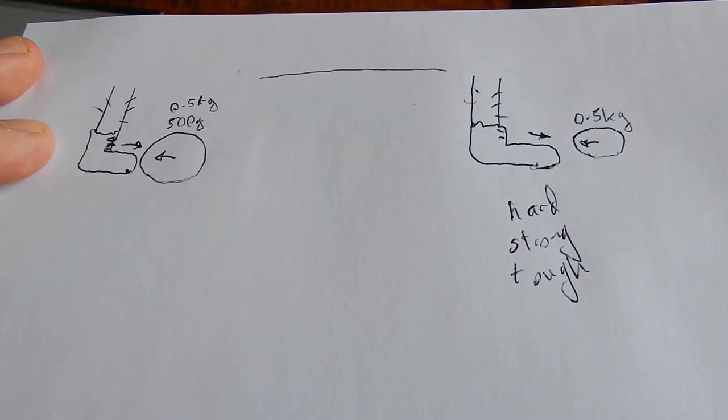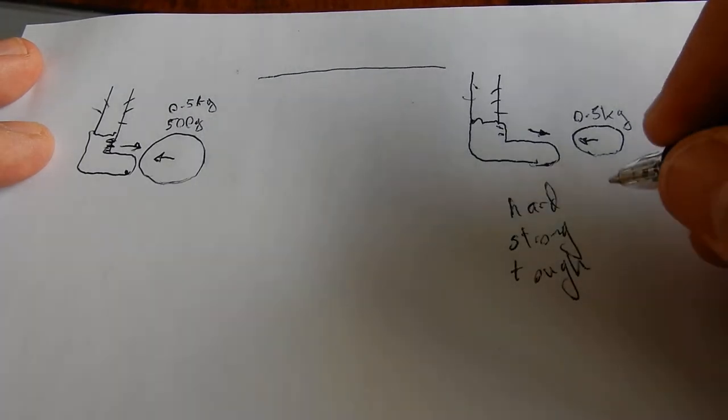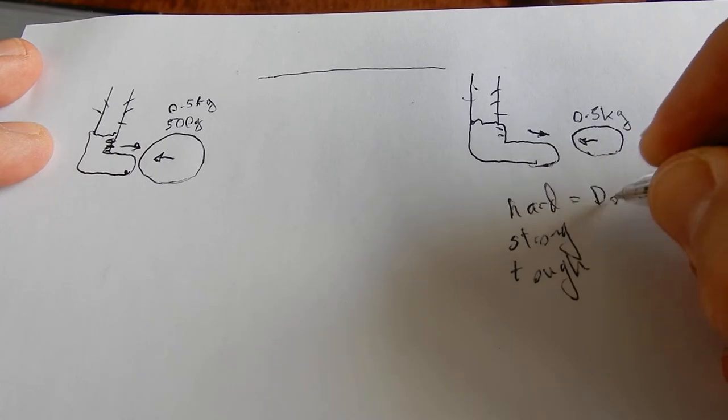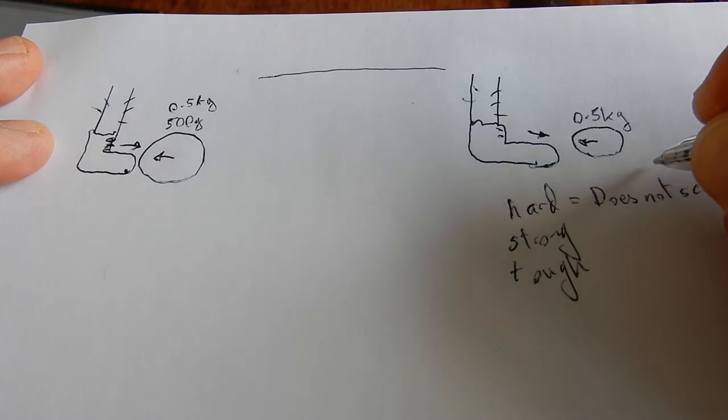And so then we're going to get words like hard and strong and I'm going to put in tough. I'm going to add words to the list the students come up with. And us being scientists would like words to have meanings. And hard means does not scratch. For instance diamonds.